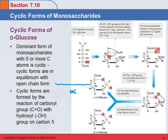Here's the beta version. Now it's above — the beta version has the hydroxyl group above. B for bird — birds fly above. So the alpha version has that hydroxyl group on the bottom, and the beta version has the hydroxyl group on the top.